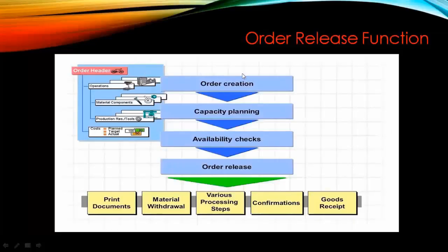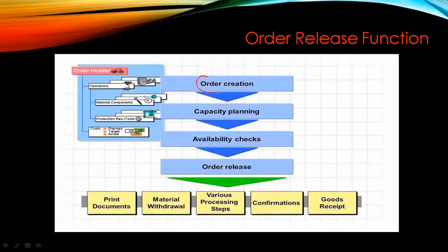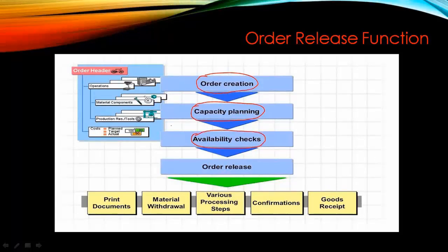Let us start with the order release function. As seen in previous videos, the production order cycle starts with order creation. After creating a production order, you do capacity planning and then an availability check to see if there is any shortage for the BOM components. When we are satisfied that there is enough capacity and stock available, we finally release the order. After releasing, other processes start — for example, printing the production order, material withdrawal, various processing steps, confirmation of the production order, and finally goods receipt.